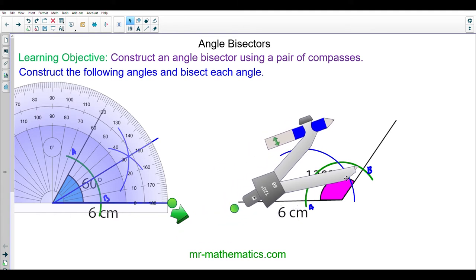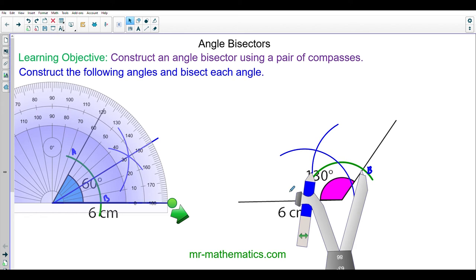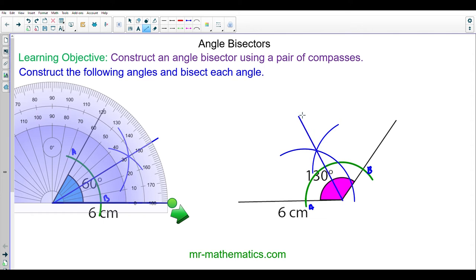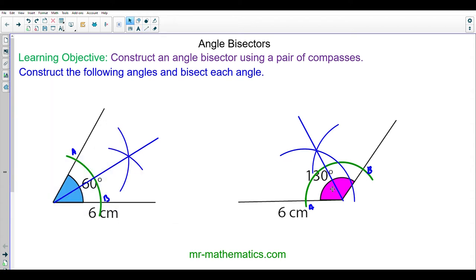Again, you will see that they should intersect. Finally, I draw my line from the angle through the two intersecting arcs. You can see we have bisected this 130-degree angle into two 65-degree angles.